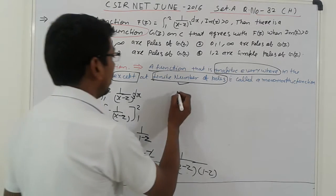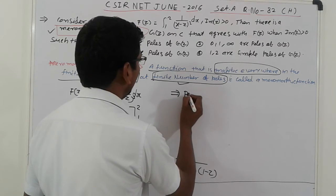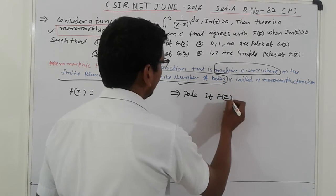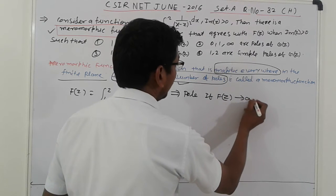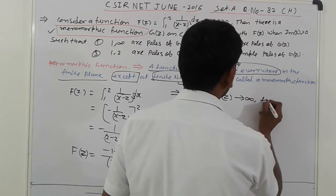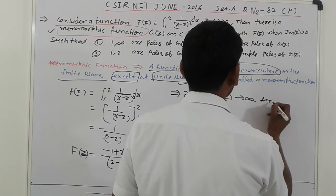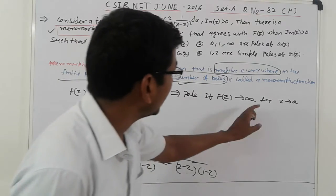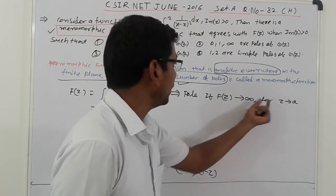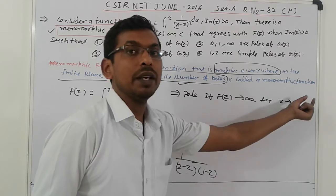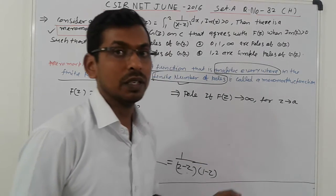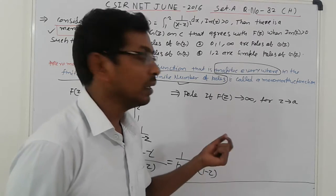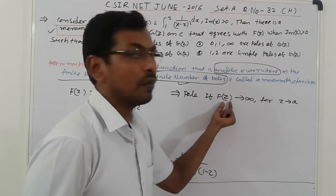Next, the pole conditions. How to judge the pole? Suppose if f of z tending to infinity for z tending to a, any value, f of z is tending to infinity for z equal to a. If a is any value considered, that case we can say that a is the pole of f of z.